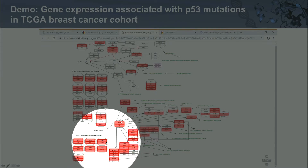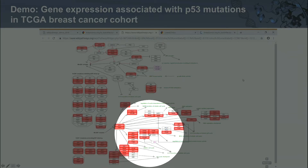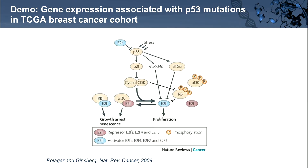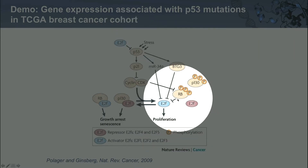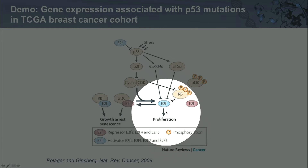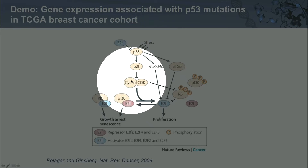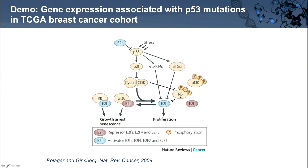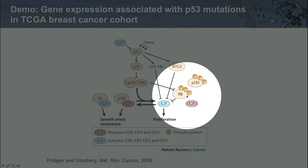Looking at these genes, it makes a lot of biological sense — many are MCM genes, CDK genes, and CCNs, all important for cell cycle progression. This recapitulates a biologically relevant pathway because E2F is the family of transcription factors that regulates the expression of cell cycle genes. p53 upregulates p21, an inhibitor of cyclin-dependent kinases, which inhibit the retinoblastoma protein. Since retinoblastoma is an E2F inhibitor, the net result of mutating p53 is that you no longer suppress E2F activity via retinoblastoma.